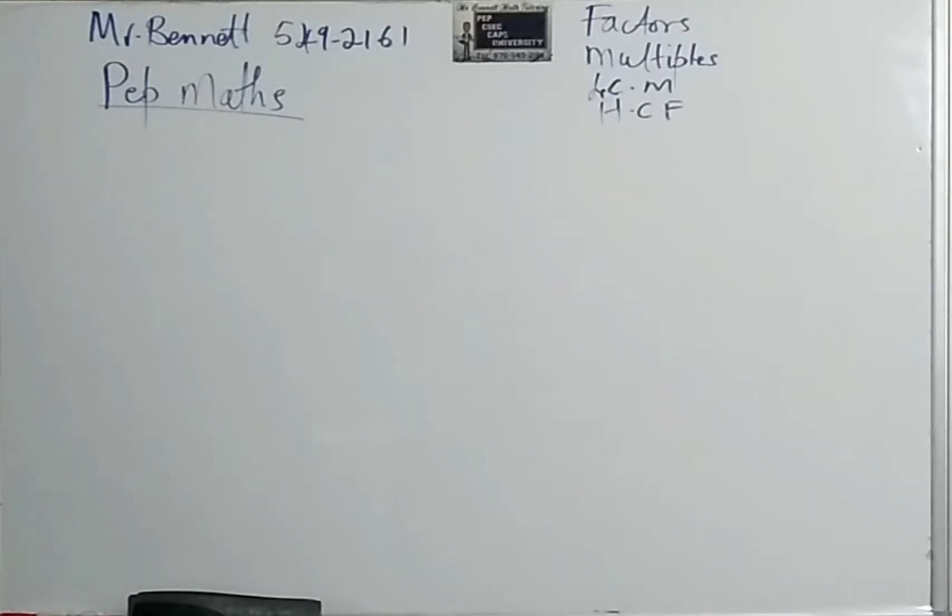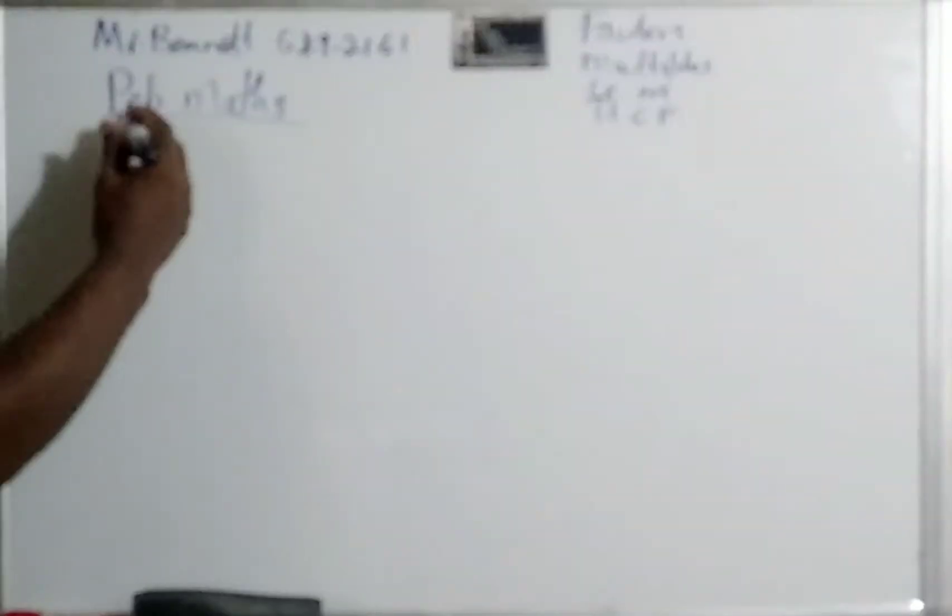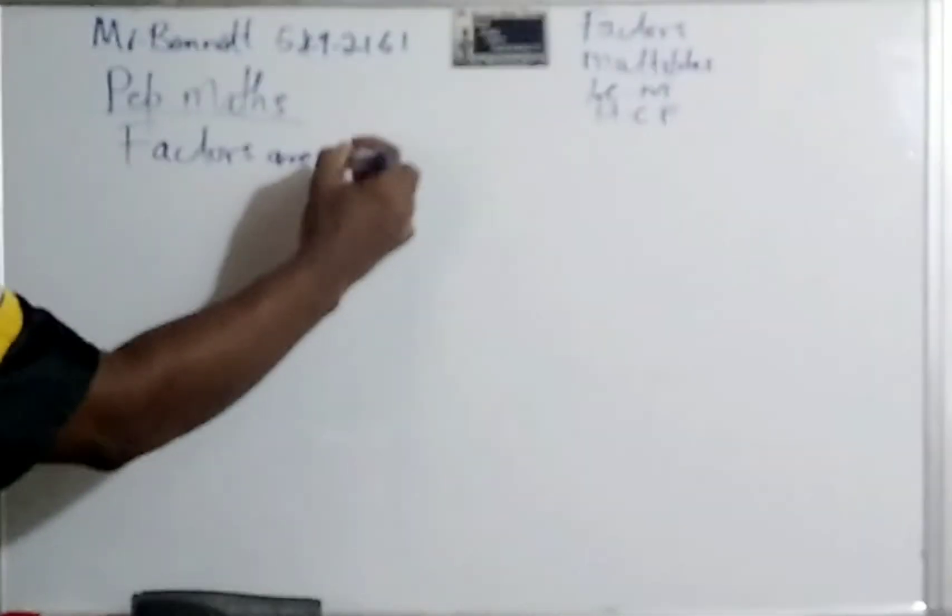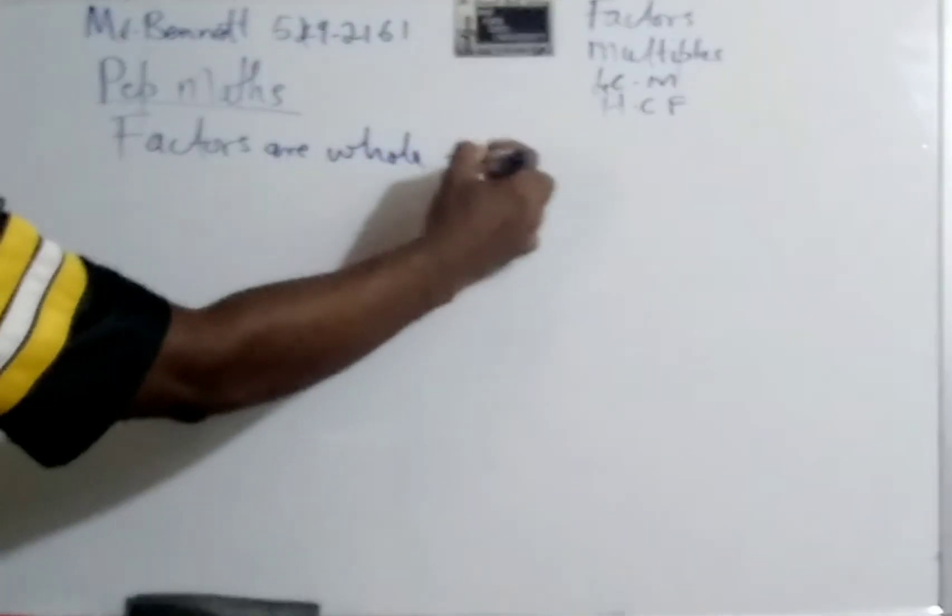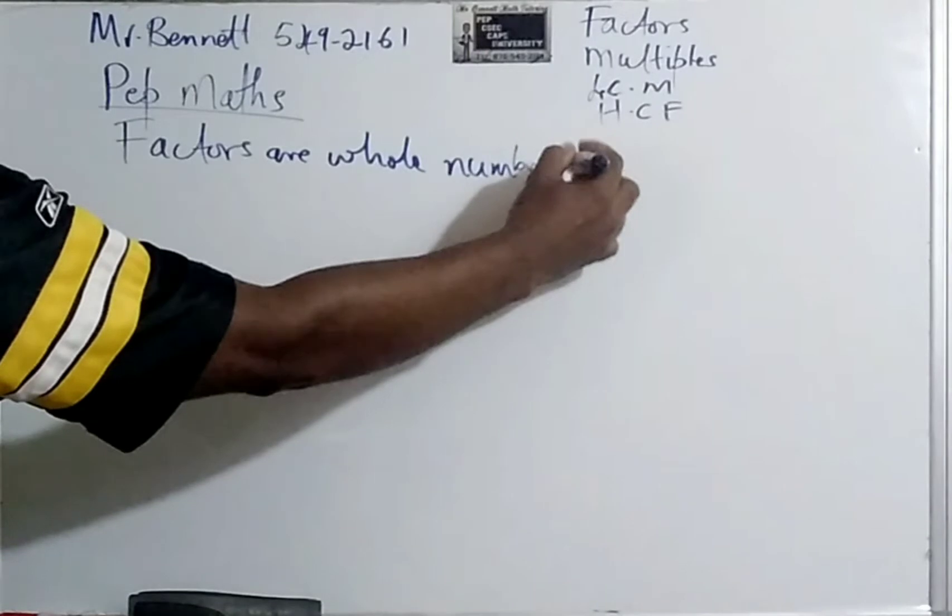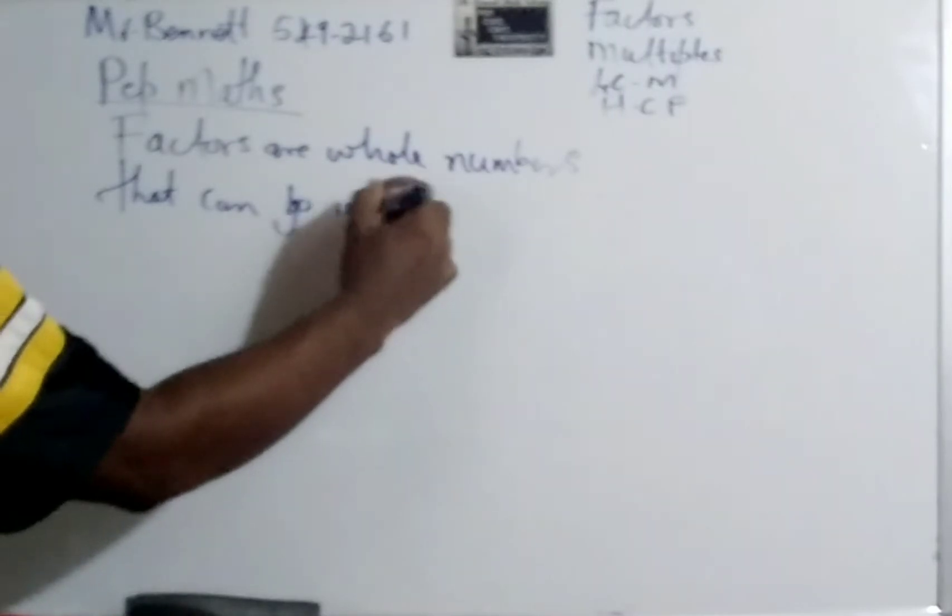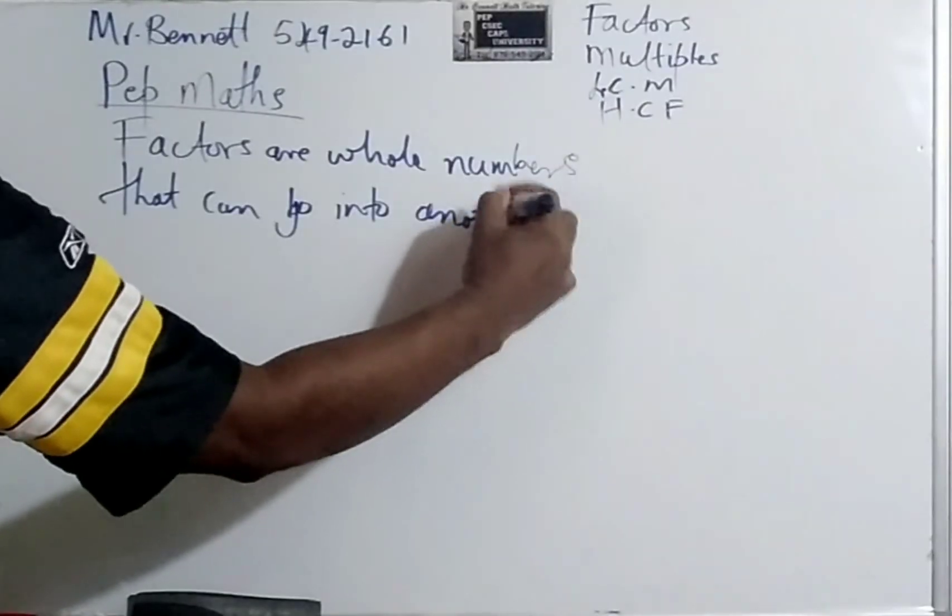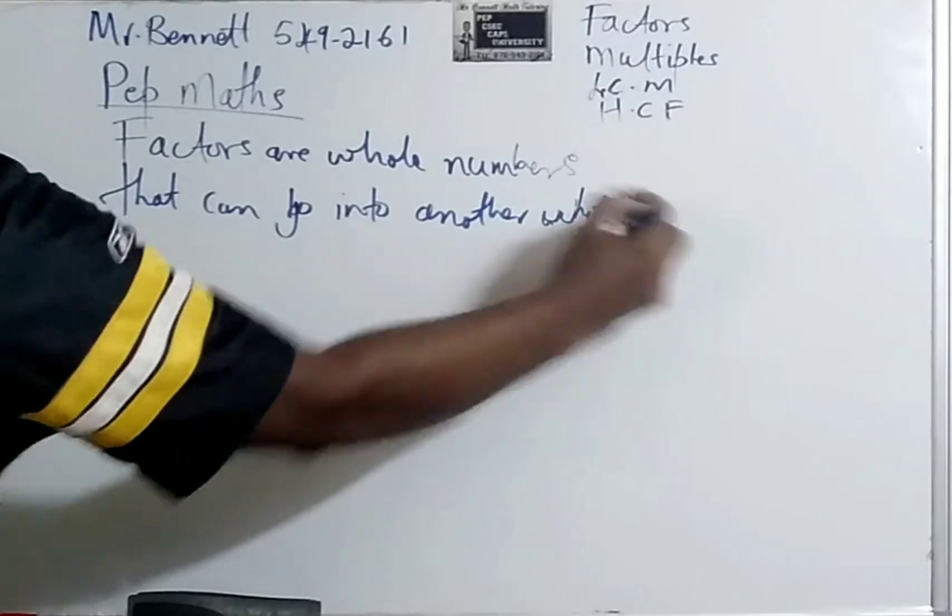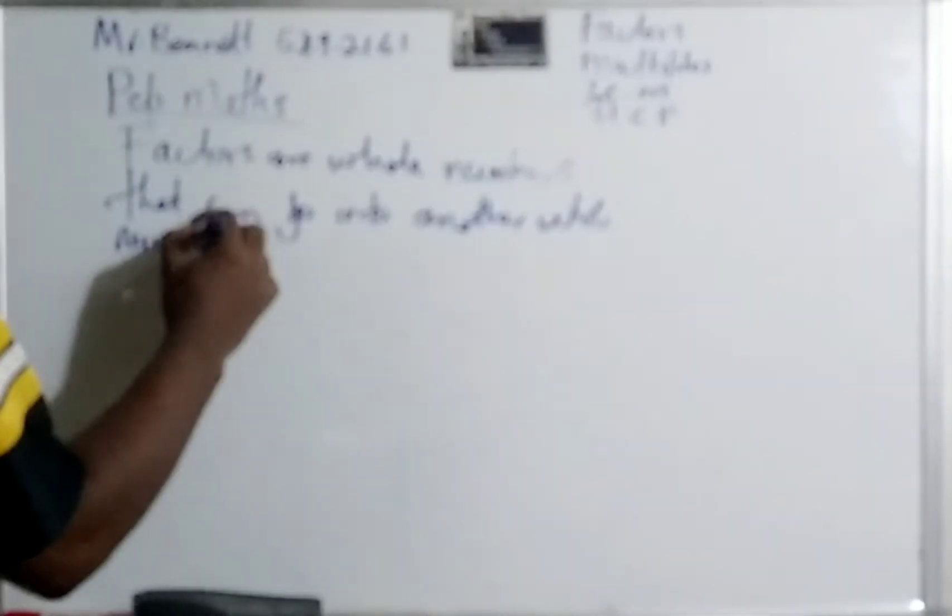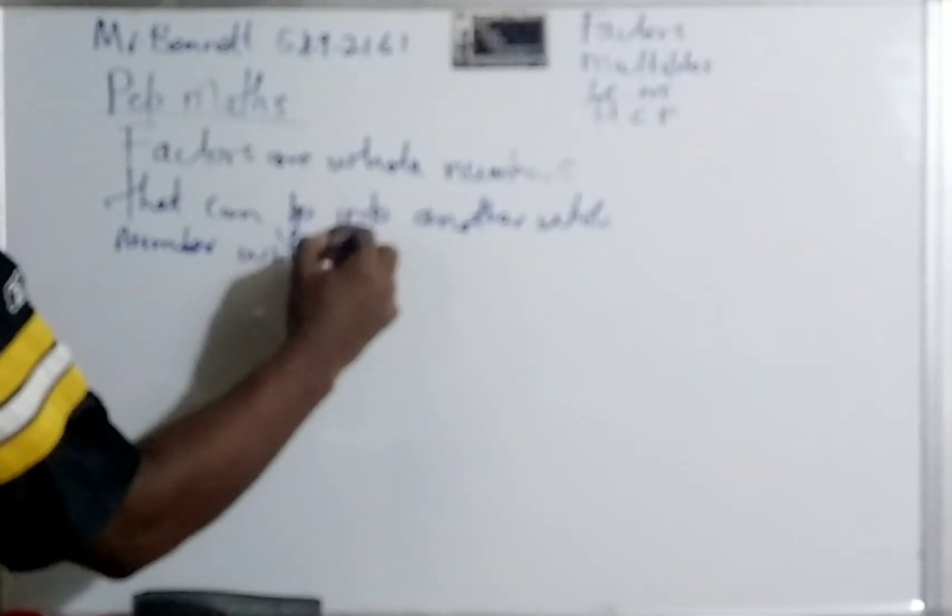LCM is the lowest common multiple and HCF is the highest common factor. Now what are factors? Let me give you factors in Jamaican terms. Factors are whole numbers that can go into another whole number without leaving a remainder.